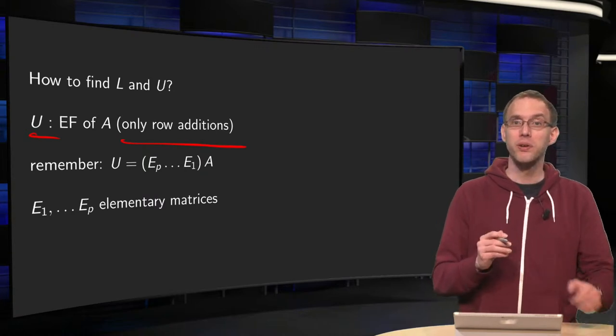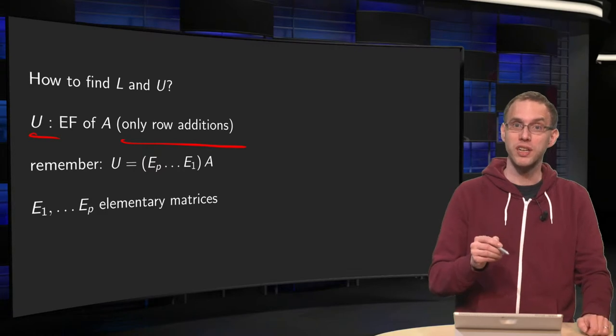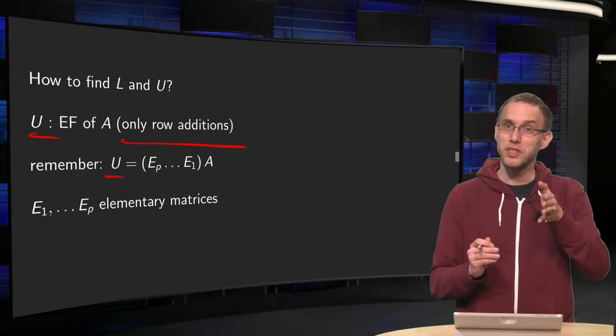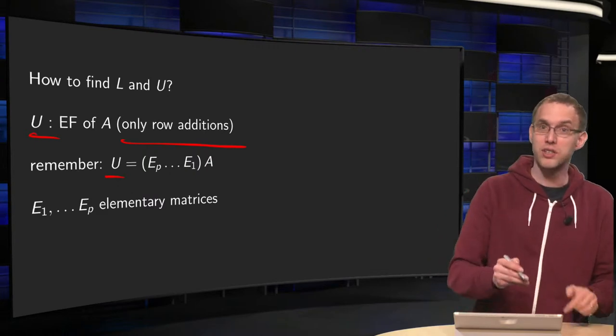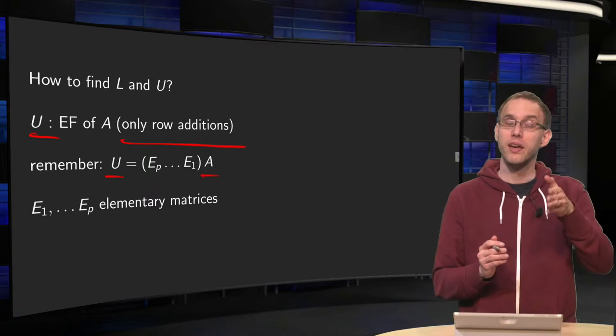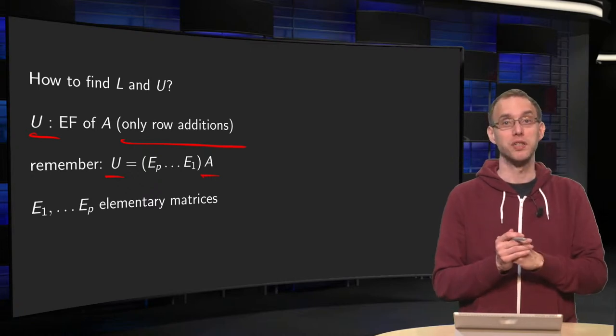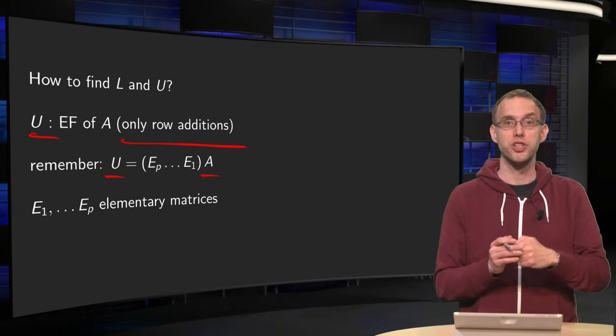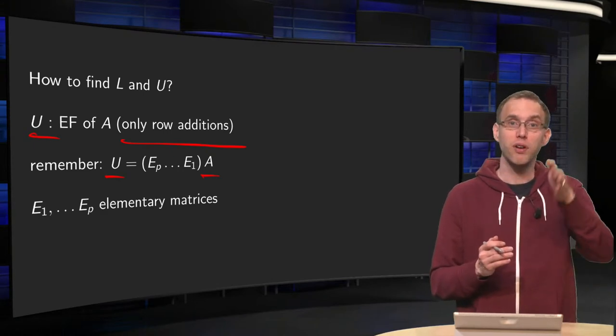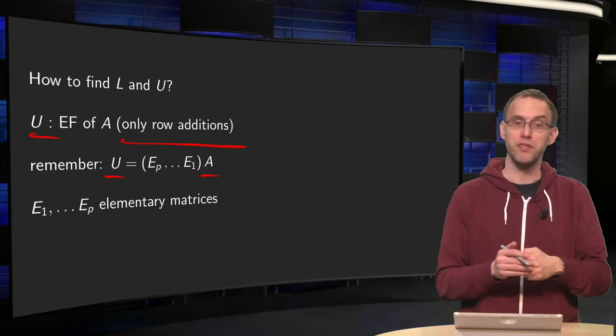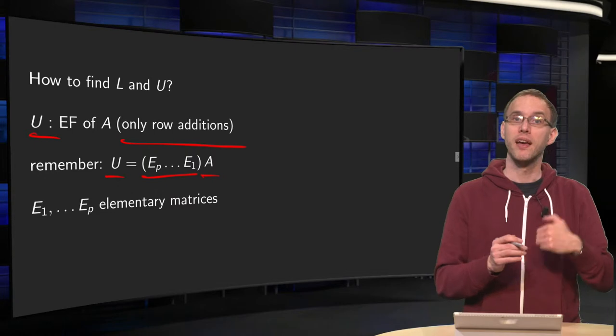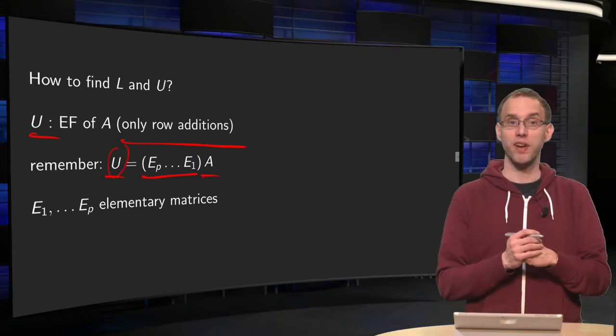Remember, you can write this process of row reductions as U equals some multiplications as elementary matrices on the left. So, you start with your matrix A, you multiply with one elementary matrix on the left. That yields one row reduction step, so the full row reduction is done by using several multiplications on the left with elementary matrices E1 up to EP. And that gives you your echelon form of A.